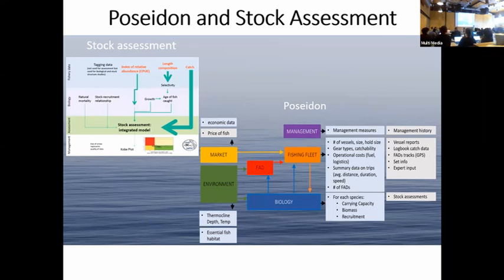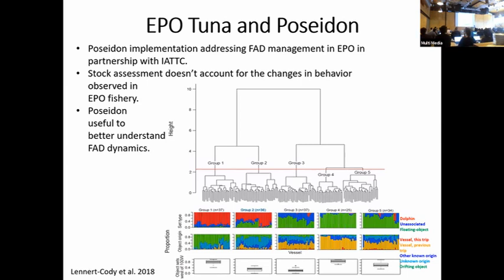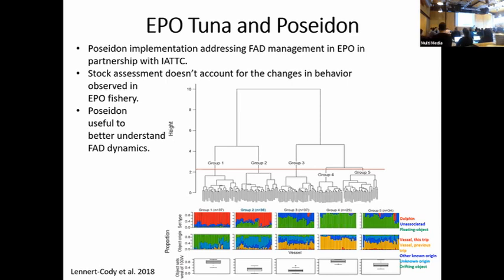One of the implementations is for the tuna fishery in the Eastern Pacific Ocean. This slide shows the several different fishing strategies employed in the Eastern Pacific tuna fishery, including sets on dolphin schools, sets on freely associated schools of tuna, and the use of fish aggregation devices to improve catchability. The question we're tackling with IATTC is to use the Poseidon model to obtain a better understanding of how the FAD fishery operates and whether there's a way from a management perspective to limit or reduce the number of floating objects, and if that would translate behaviorally to a reduction in catch and an increase in biomass.